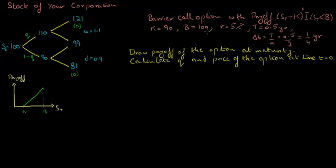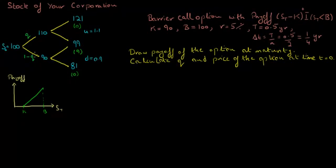In order for this option to have a positive payoff, the stock price must be greater than the strike price and less than the barrier. When the stock price in 6 months reaches 99, the stock price is greater than the strike price of 90 and less than the barrier of 100, so the payoff is 99 minus 90, which equals 9.